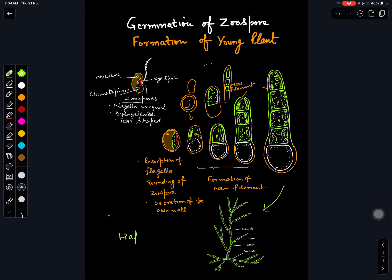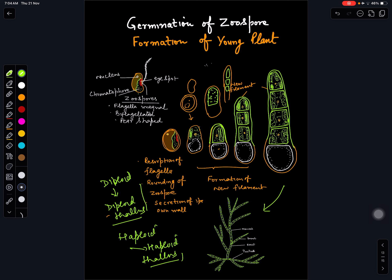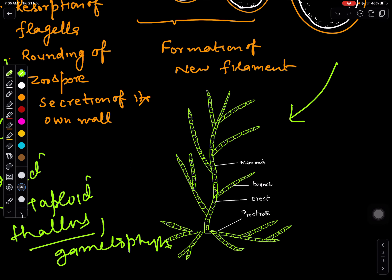If zoospores are haploid, they will develop into a haploid thallus, which is gametophytic in nature. If zoospores are diploid, they will develop into a diploid thallus, which is sporophytic in nature. Ultimately, zoospores will develop into the young thallus of Ectocarpus.